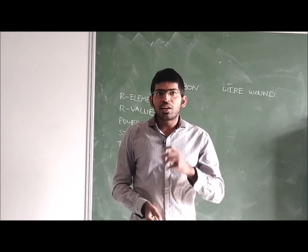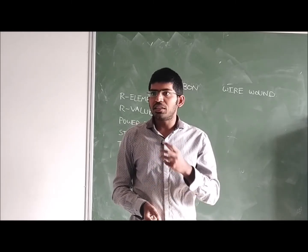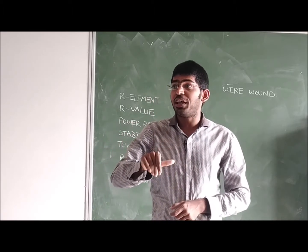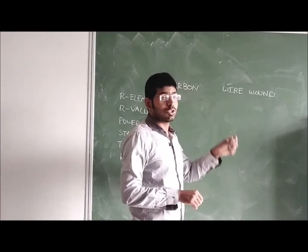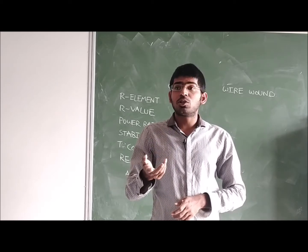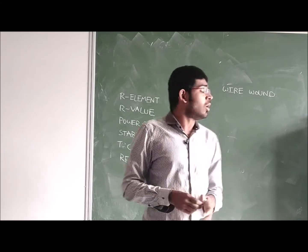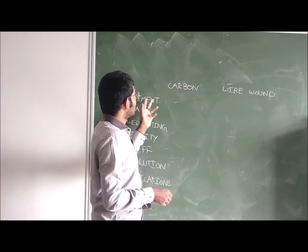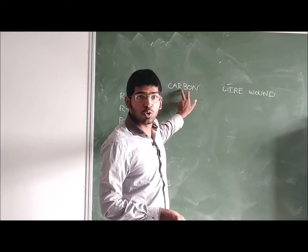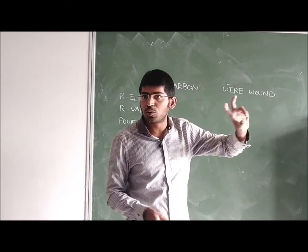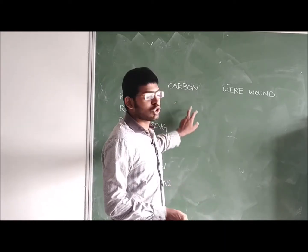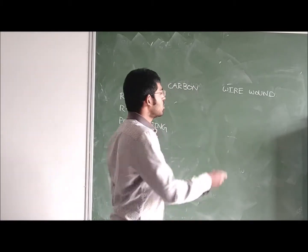We are discussing the comparison of carbon and wire wound potentiometers. A potentiometer is a device in which the resistance can be varied. We are discussing two types: one is the carbon potentiometer and the second is the wire wound potentiometer. In the laboratory we will observe how these two types differ. The resistive element in the carbon potentiometer is carbon, and in the wire wound potentiometer it is wire.